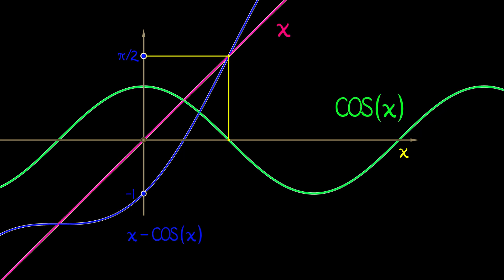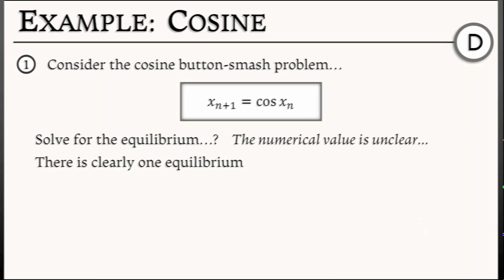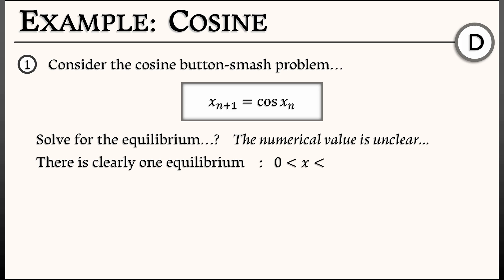That means there is a root in there somewhere. And with a little argument from monotonicity, we can get that there's just one root. Okay, so I know that there's an equilibrium somewhere between 0 and π/2. Well, what am I going to do with that? I'm going to check for stability.